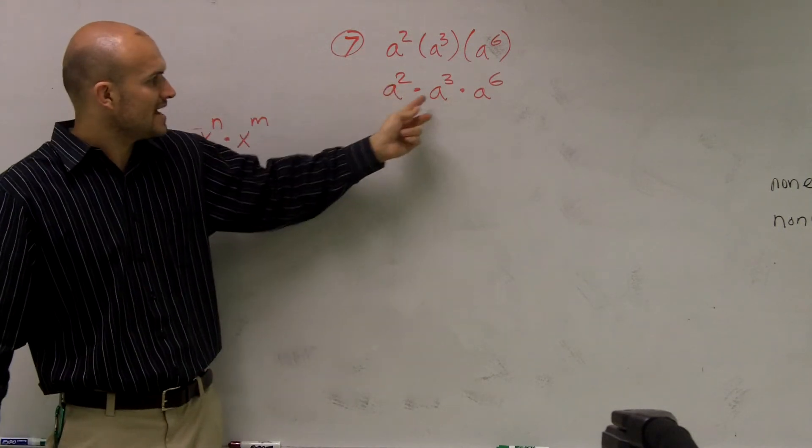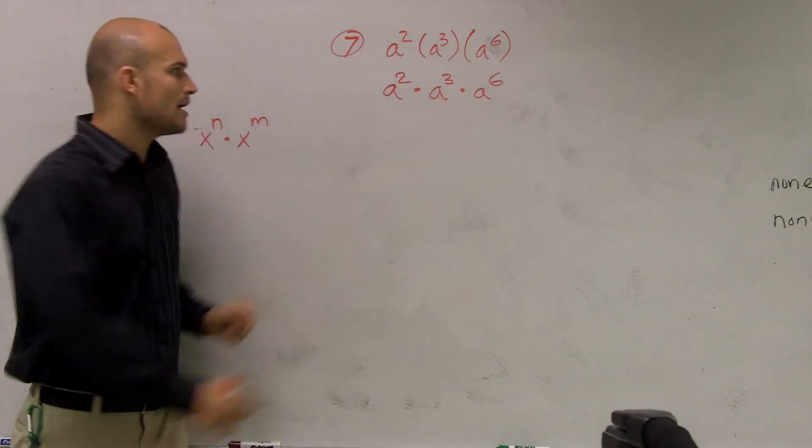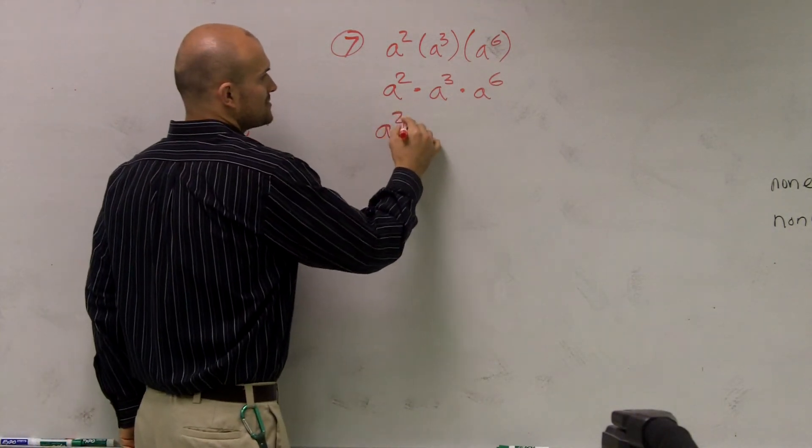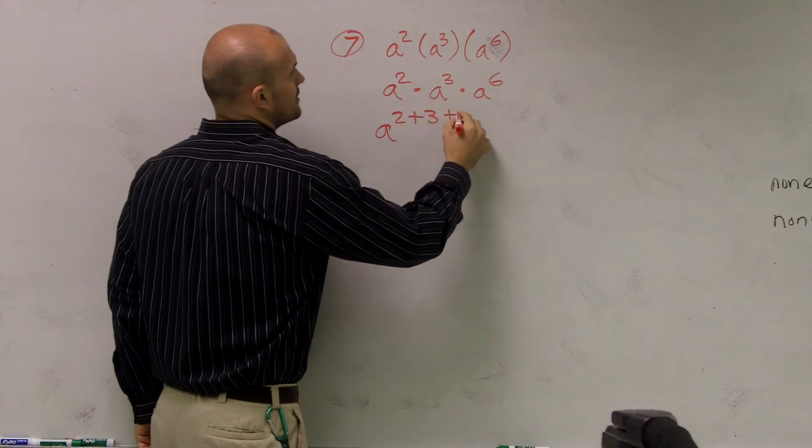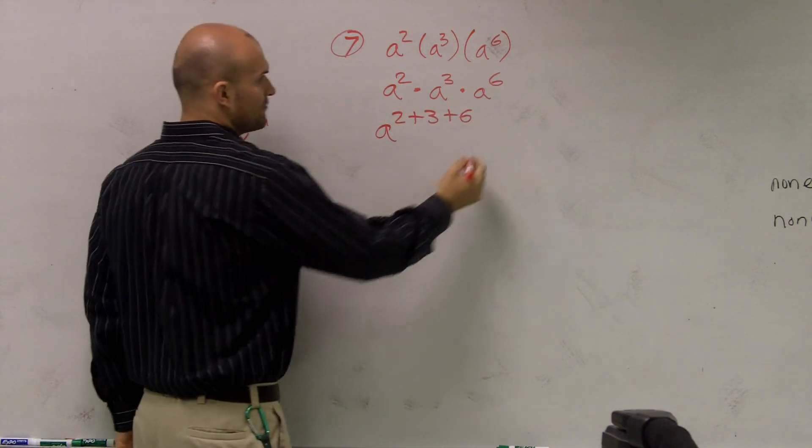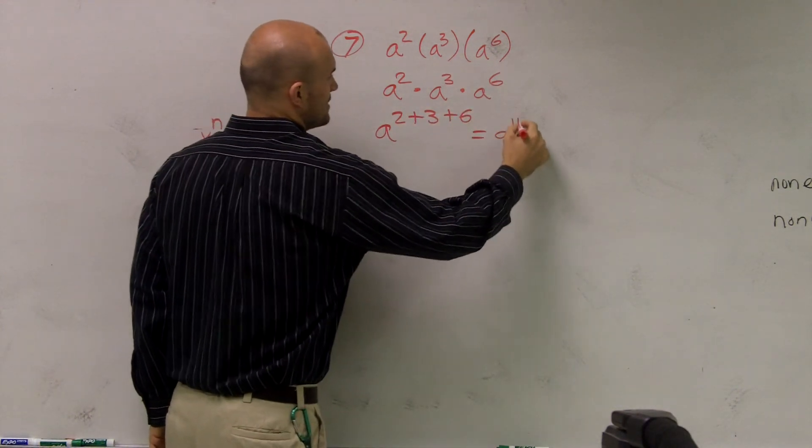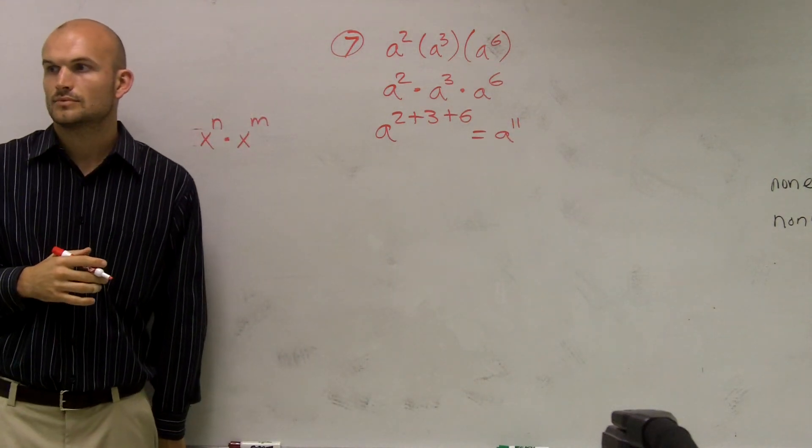Simply, since I have the same base of a, all I need to do with this problem is a to the 2 plus 3 plus 6. Therefore, the final answer is going to be a to the eleventh.